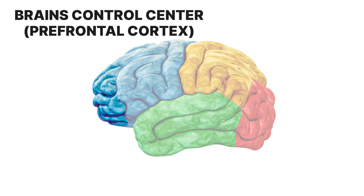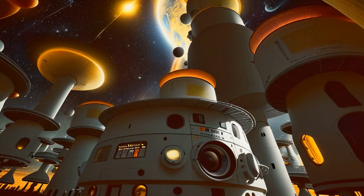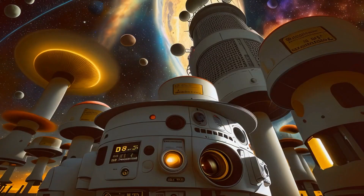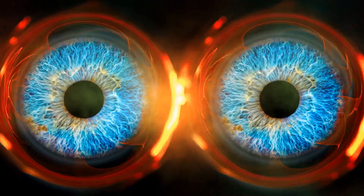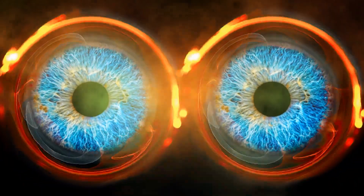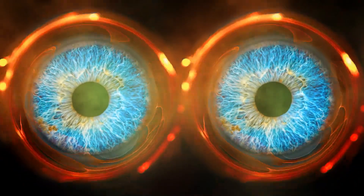Last but not least, we have the prefrontal cortex, the brain's control center. When this region isn't pulling its weight, it can result in hallucinations that feel all too real, blurring the line between imagination and reality.